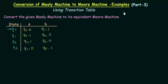Till now we have studied about conversion of Mealy machine to Moore machine using transition diagrams. In this lecture we will be studying about the conversion of Mealy machine to Moore machine using transition table. Here is our example: convert the given Mealy machine to its equivalent Moore machine. We have a Mealy machine given as a transition table and we have to convert this to its equivalent Moore machine.